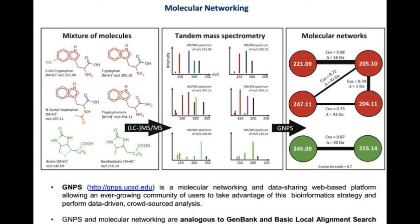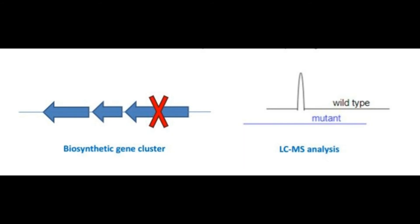There are many methods by which we can identify the metabolic product of certain metabolic pathways. For example, in the case of a cryptic biosynthetic gene cluster, we can perform a gene knockout and then compare the metabolic profile of that pathway with the wild type.